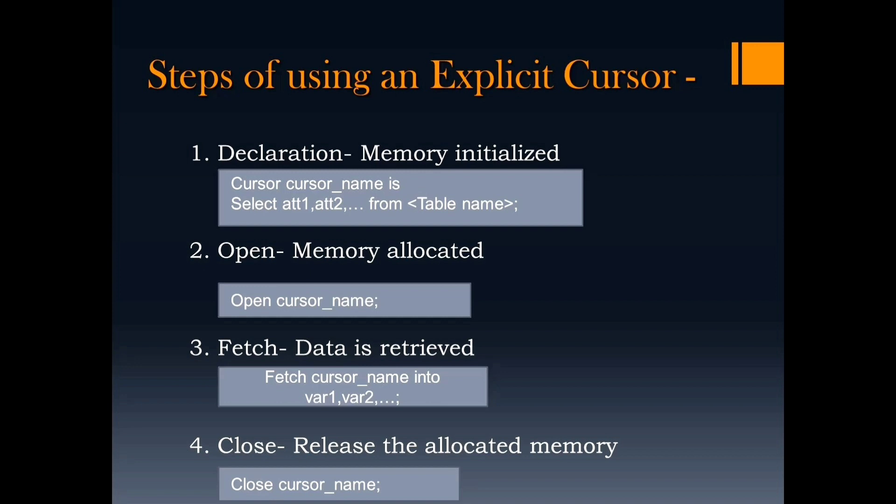The second step is open. In this step, memory is allocated for the cursor. The third step is fetch — in this step, the data is retrieved from the cursor into some variables. The fourth and last step is close. In this step, the allocated memory is released. The syntax of all four steps are given on the screen.